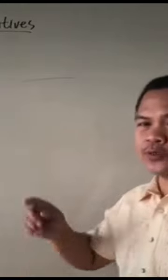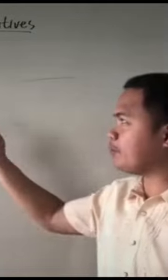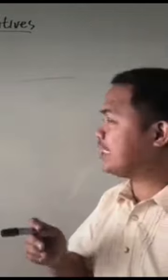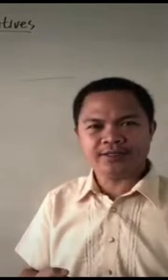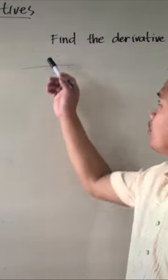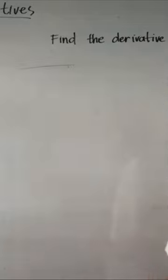The next topic is derivatives. The first topic we're going to discuss is the derivative of a function and the slope of a tangent line. This is one method which we can use in finding the derivative of a given function. Let us now find the derivative of y equals 4x squared plus 15.